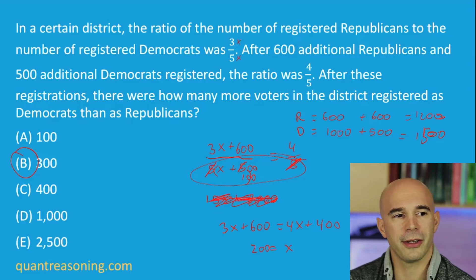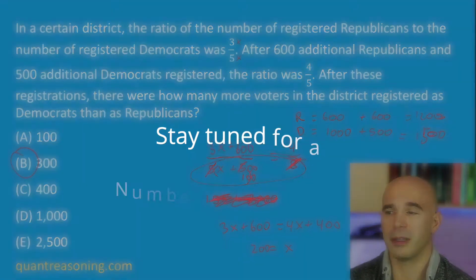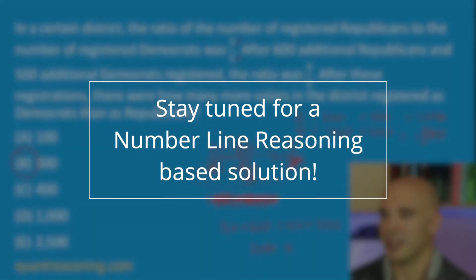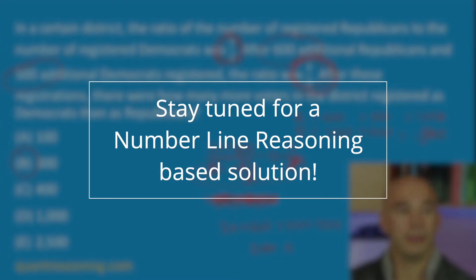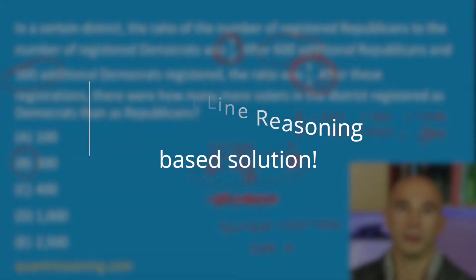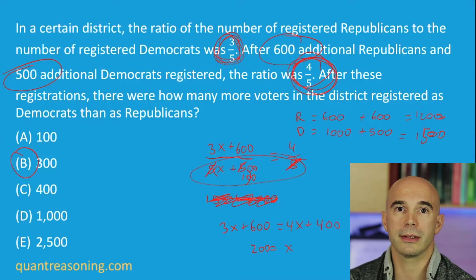People reading this question are not thinking, 'Maybe I should use a number line.' It's just not something that would cross your mind typically. It is a mixture question — a question that describes mixing together two ratios to produce some midpoint.